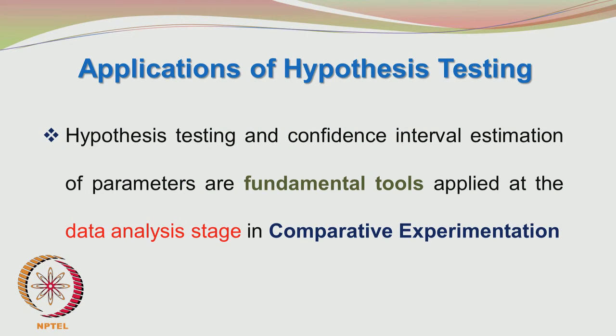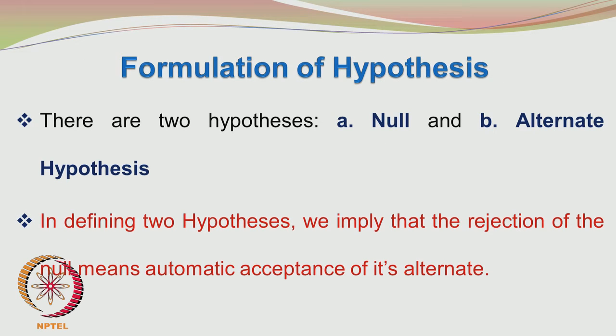In design of experiments as well as linear regression tools, we will be extensively seeing the application of the T-test, the F-test, and the 95% confidence intervals. Hypothesis testing and confidence interval estimation of parameters are fundamental tools applied at the data analysis stage in comparative experimentation. There are 2 types of hypothesis — one cannot exist without the other: the null hypothesis and the alternate hypothesis, which contradicts the null.